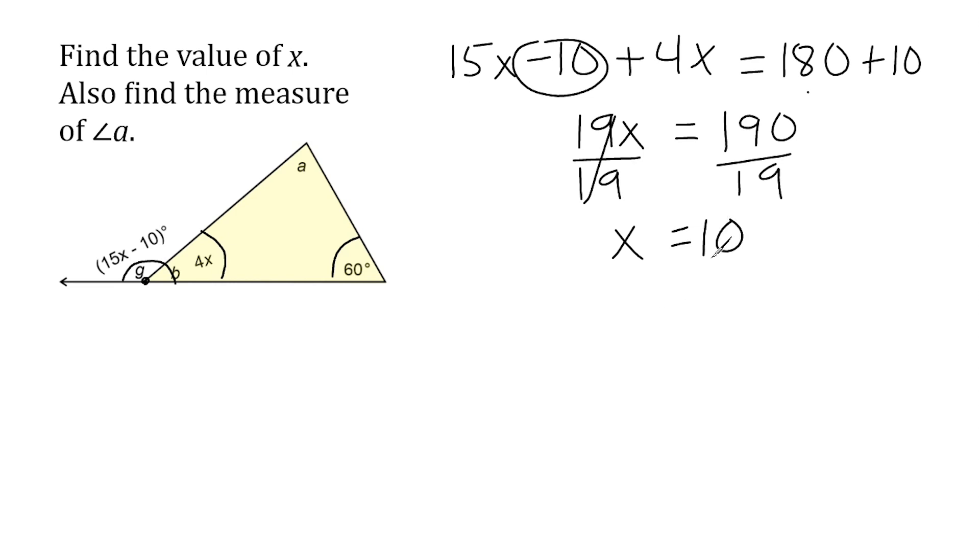Now that we know that x is equal to 10, we're going to substitute 10 for x in this expression. So, 4 times 10 would, of course, be 40 degrees. So, now we have two of our three interior angles.